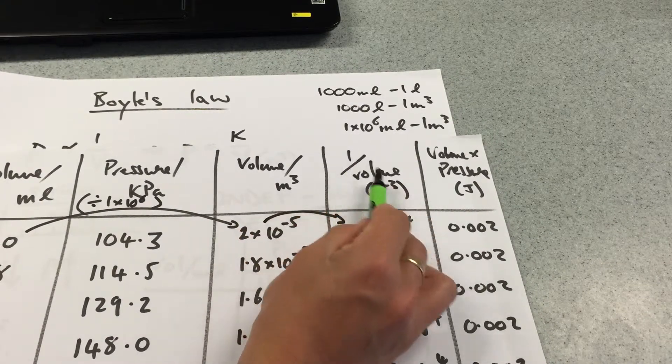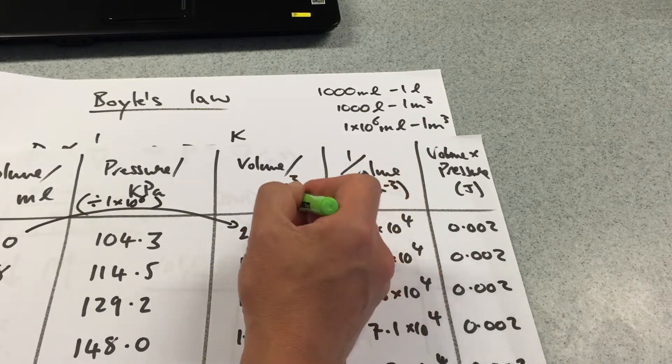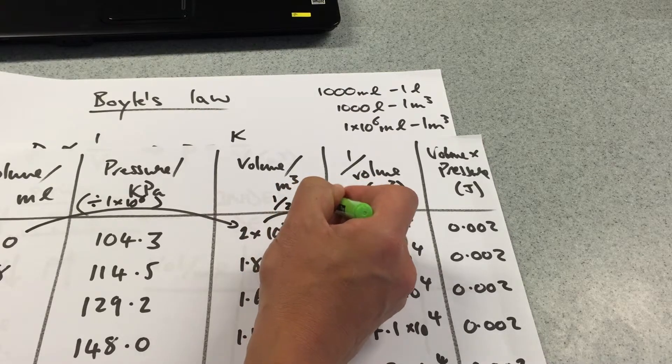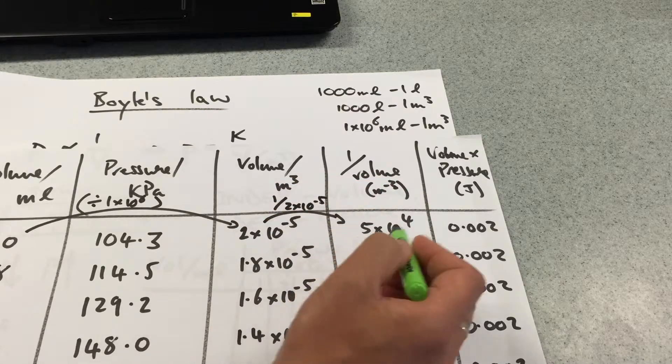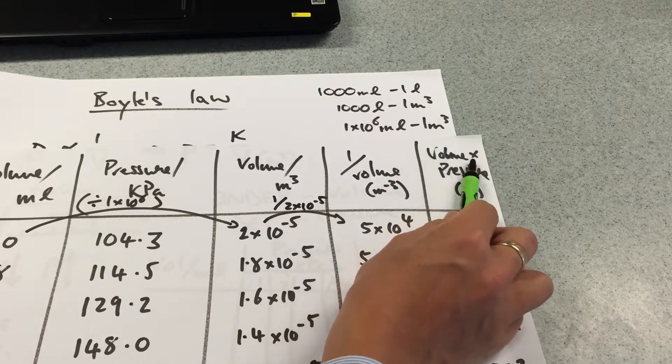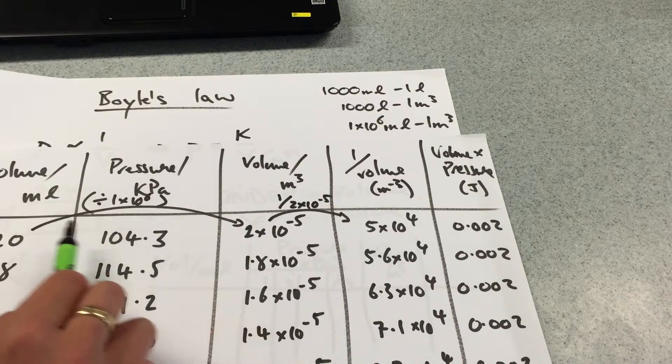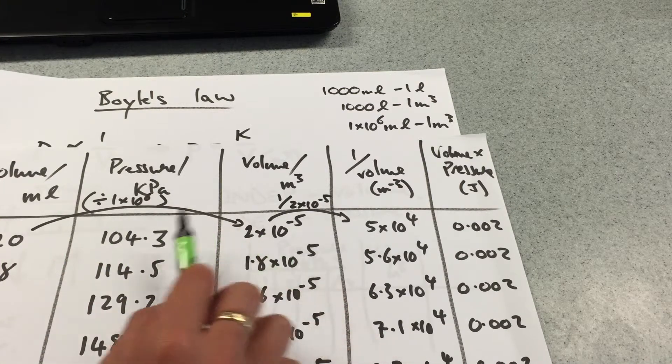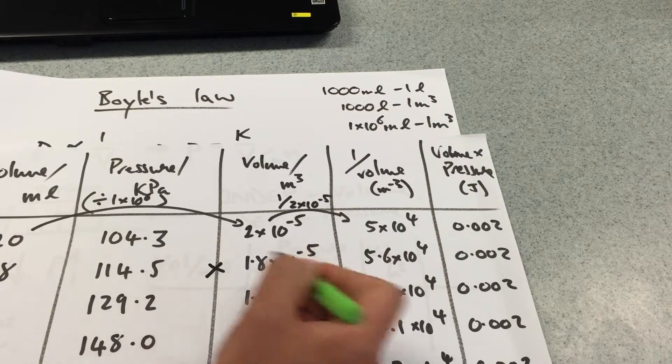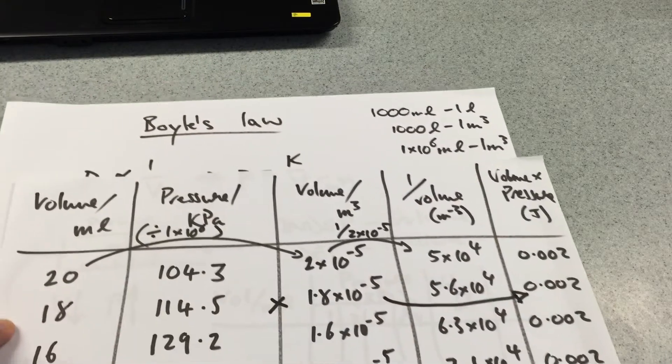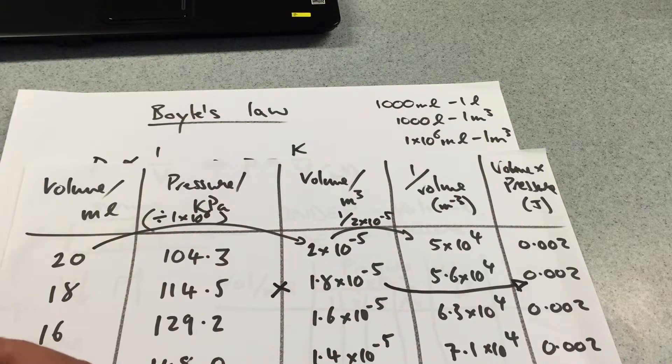What I did is I put 1 over volume which is quite interesting so I just 1 divided by 2 times 10 to the minus 5 in order to get to this and my last column here is volume times pressure so I took the volume here, the volume here times by the pressure. Let me do that one and that gives me that value there. Okay now what does this tell us?